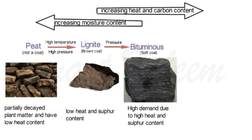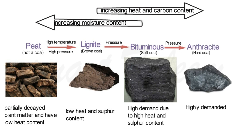You can see the bituminous coal picture here. It is highly in demand due to its high heat content and sulfur content — burning it releases more heat, which is why it is highly demanded. When further pressure and temperature are applied on bituminous coal, it is finally converted into anthracite, which is named hard coal. Anthracite is also highly in demand due to high heat content and low sulfur content, making it environmentally friendly when burned.